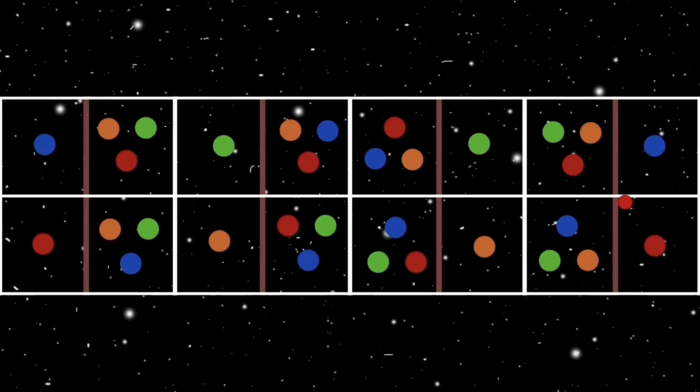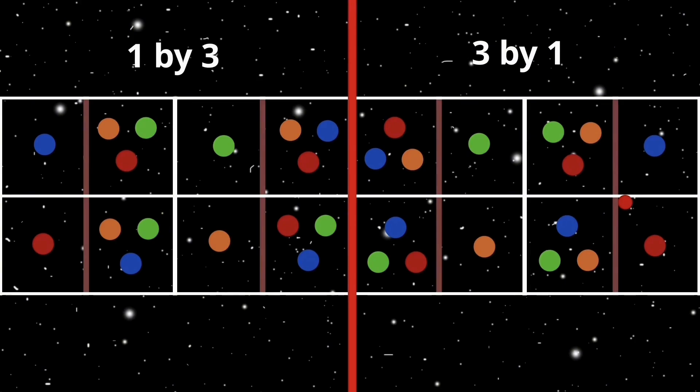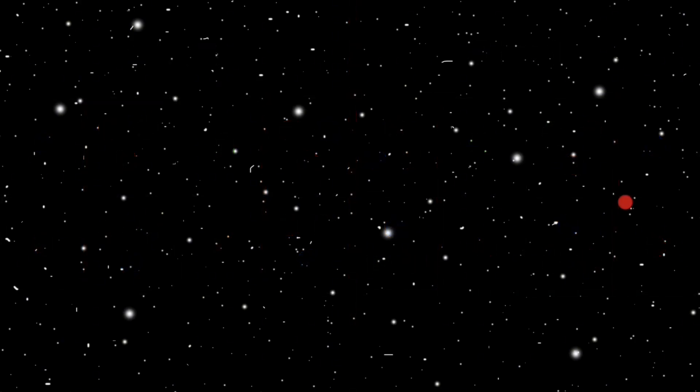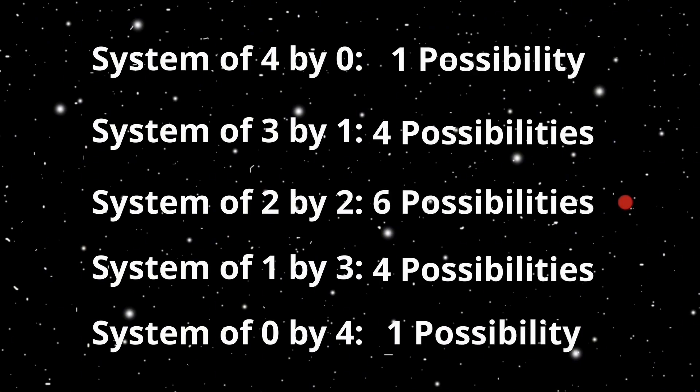Wait, how does the state with three in one chamber and one in the other have more possibilities? It doesn't, of course. We can't combine three by one and one by three configurations when given multiplicity, since the two are distinguishable. So, it is one, four, six, four, and one.